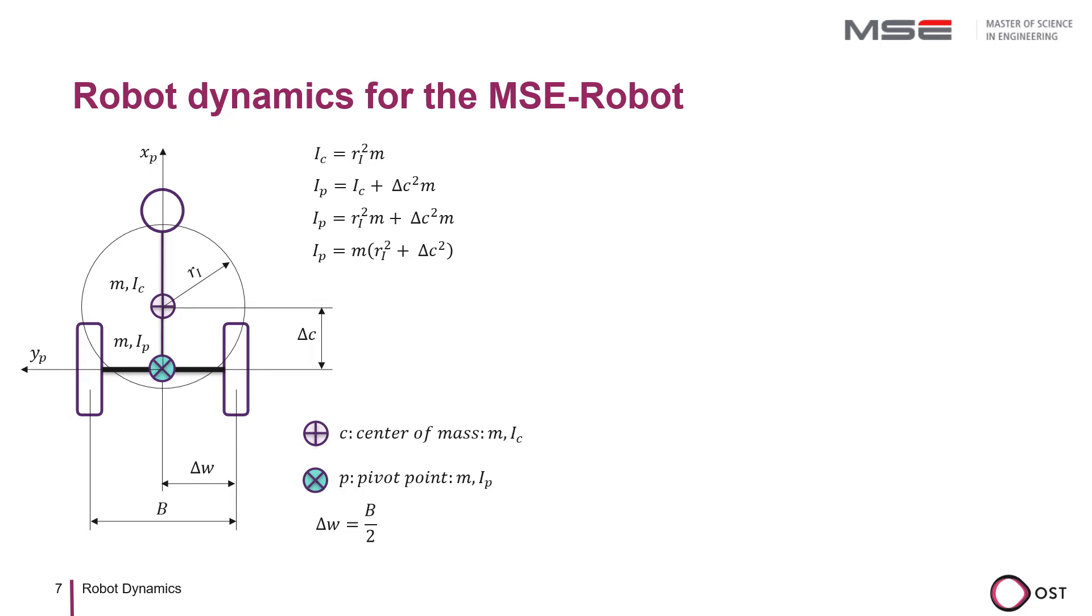We assume that the vehicle is pushed with the force FP and therefore accelerates with XP dot dot and we set up Newton's equation for this. The force FP is, of course, nothing other than the sum of the driving forces of the two wheels, which we denote here by QR and QL for the right and the left wheels. The acceleration at pivot is the average of the two wheel accelerations. If we insert the forces and accelerations of the wheels into the equation, we get a first dynamic relationship between them.